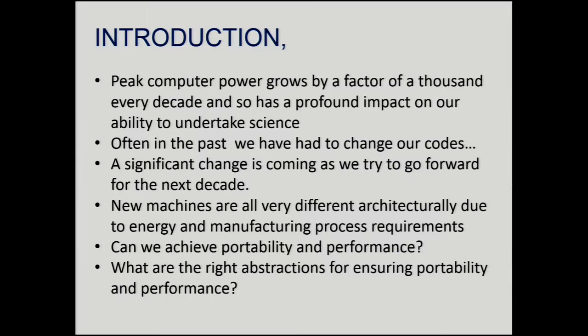Peak computer power grows by a factor of a thousand, and we can obviously really use that to improve the science that we do. In the past, we had to change our codes when we went from vector machines to multiprocessor machines. Now the change is coming again, and the new machines are all rather different in many ways. This is down to our desire to keep power consumption down and the challenges of manufacturing at finer and finer scales. The key question I want to address is: what are the right abstractions for ensuring portability and performance?